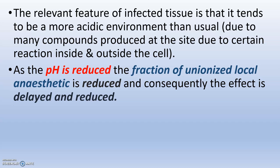So what happens? The local anesthetic will be ionized. Ionized local anesthetic cannot get into the cell and block the sodium channel. For the local anesthetic to work properly, it needs a large fraction of unionized local anesthetic. Due to the reduced pH, the fraction of unionized local anesthetic is reduced. That means the amount of local anesthetic that can pass into the cell through the bipolar membrane will be less, so the local anesthetics will not be acting properly and consequently the effect is delayed and reduced.